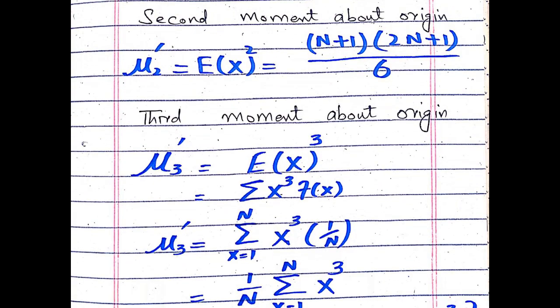The second moment about the origin, represented by μ₂', is equal to the expected value of X squared, and this equals (N+1)(2N+1)/6.